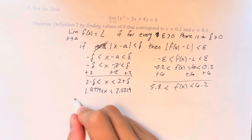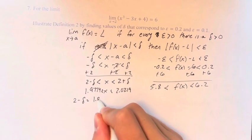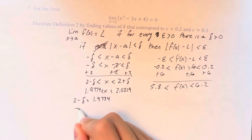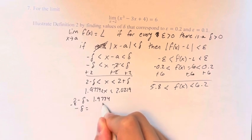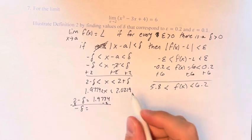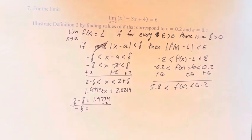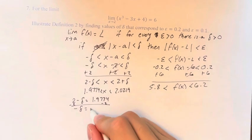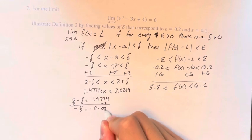So if 2 minus lambda is equal to 1.9774, negative lambda, subtracting 2 from both sides, is equal to 1.9774 minus 2 is equal to negative 0.0226. Therefore, lambda is equal to positive 0.0226.